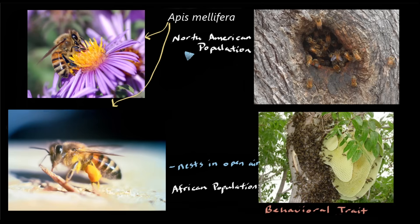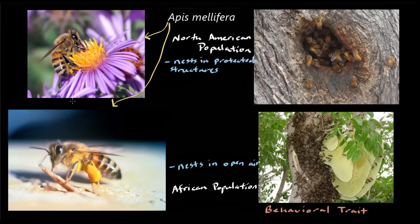So North American honeybee populations much prefer to live inside of protected structures, like inside the trunks of hollow trees or the boxes that beekeepers provide. And in Africa, there are also more large, fearsome predators interested in getting into the bee's nest, so the frequency of traits related to hyper-defensiveness is much more common than in populations adapted to North America, where there are fewer aggressive predators.